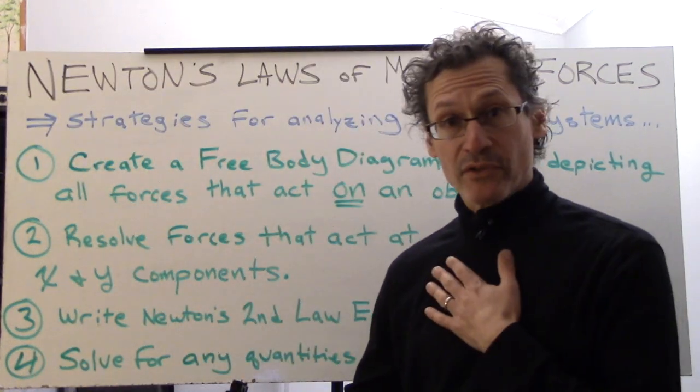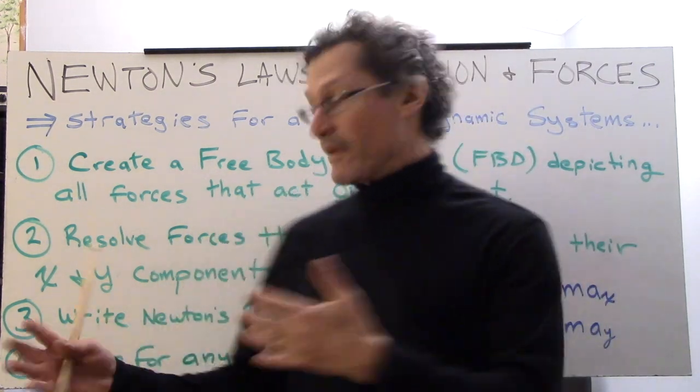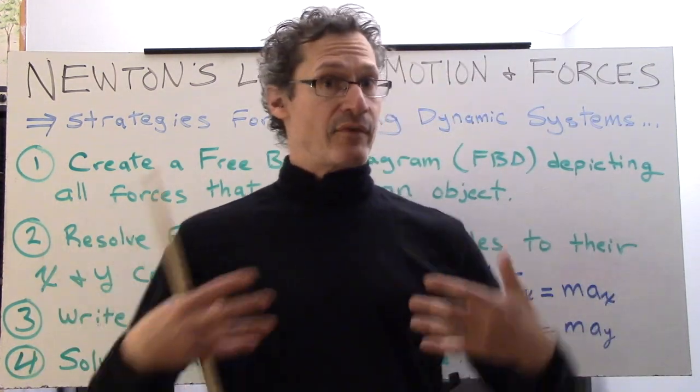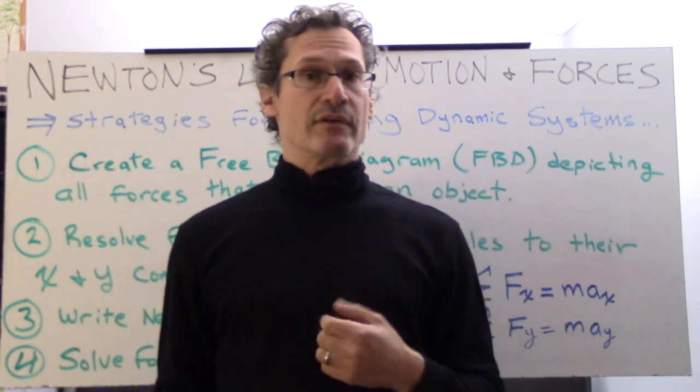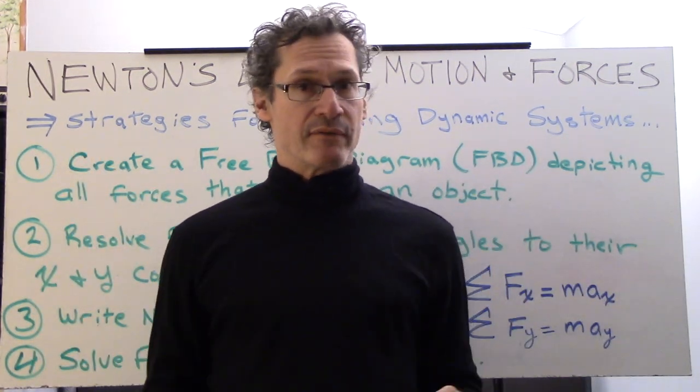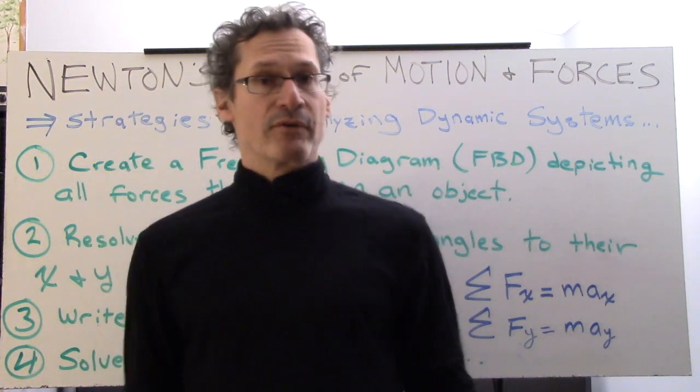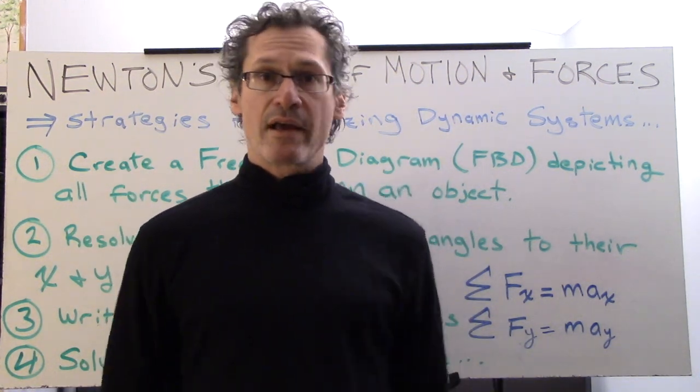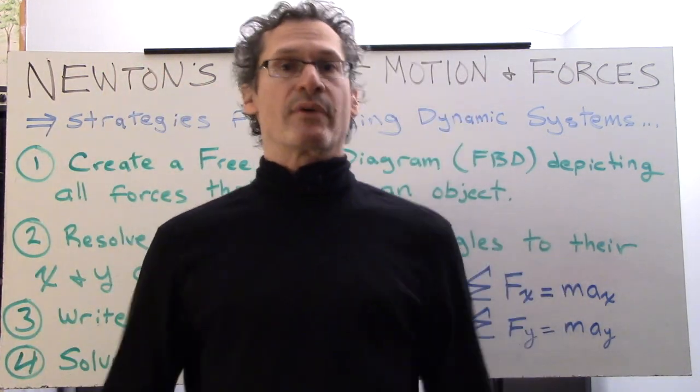And then the last thing we'll do is solve for any quantities needed. That way once we write the equations we'll have all the variables that we need there or if not we'll substitute them in and then solve for the quantity that we're actually looking for. So I'm going to give you two examples coming up, two quick examples, one with the vertical and one with the horizontal type motion, and they will demonstrate these four steps in action. So here we go.